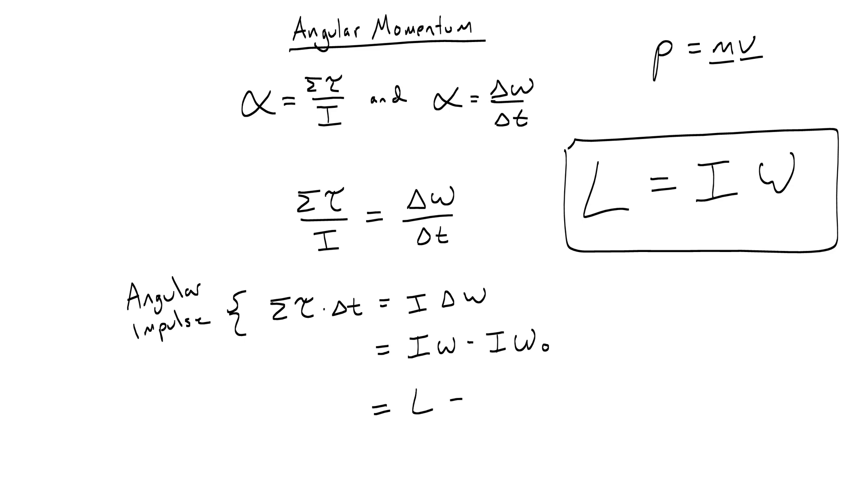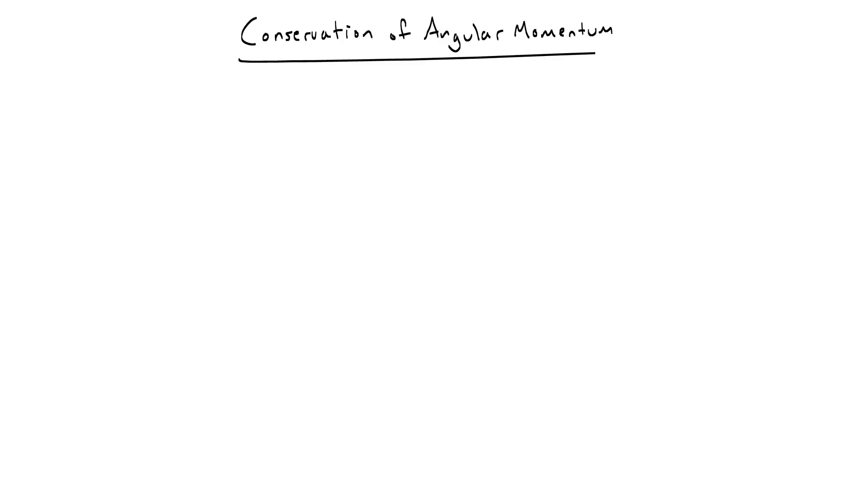So we can really write L minus L naught or delta L to finish off this equation. Now, the units for angular momentum are a little weird. They come out to be kilograms meters squared per second, which is a bit of an odd unit. Now, because angular momentum is essentially just the rotational version of linear momentum, and all of the same rules apply, Newton's third law applies. For every action there's an equal and opposite reaction. A torque is an action of force, and so for every torque that's caused by something there's an equal and opposite torque.